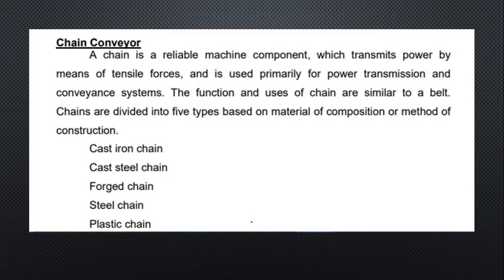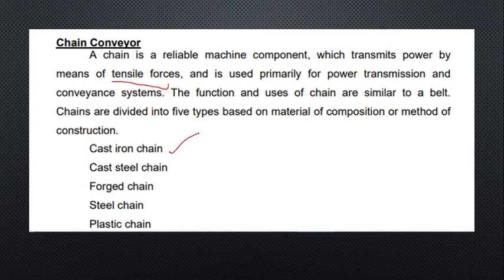The chain conveyor is used for power transmission and in conveyor systems. Materials used include cast iron chain, cast steel chain, steel chain, and plastic chain. The conveying material composition and method of construction is the same, and its function is the same as the belt conveyor which was learned in the earlier lecture.